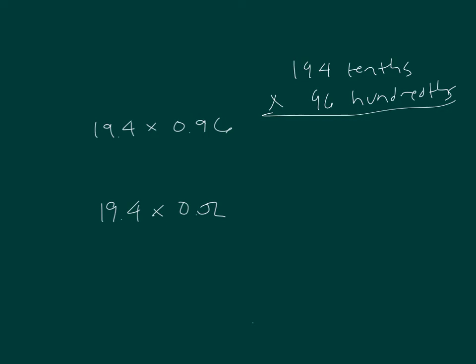6 times 4 is 24, 4 regroup of 2. 6 times 9 is 54, plus 2 is 56, 6 regroup of 5. 6 times 1 is 6, plus 5 is 11. And then our regroups. Cross them out. 9 times 4 is 36, 6 regroup of 3. 9 times 9 is 81, plus 3 is 84. 9 times 1 is 9, plus 8 is 17.